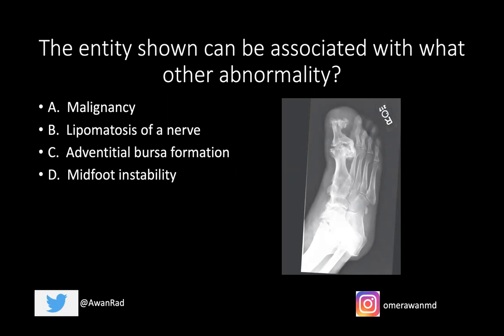What we have here is a frontal view of the right foot. Notice how disproportionately enlarged the great toe is when compared to the second, third, fourth, and fifth digits. Not only is there marked soft tissue enlargement of the great toe, the bone itself is actually enlarged. The entire first ray — from the level of the navicular, the cuneiforms, the first metatarsal, and the proximal phalanx — is markedly enlarged and irregular.